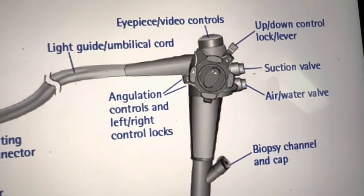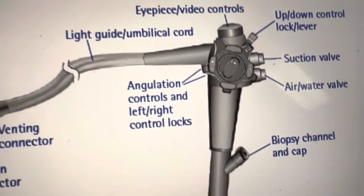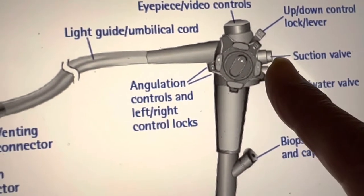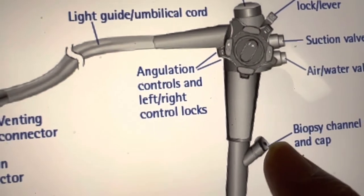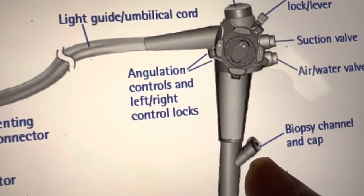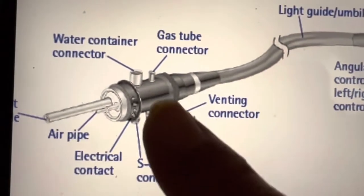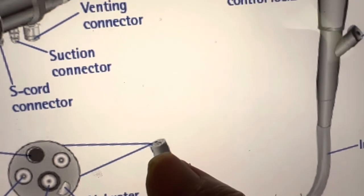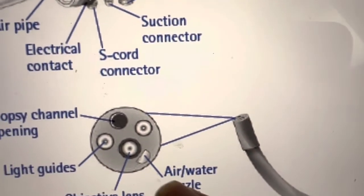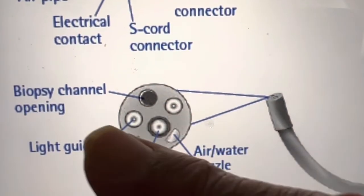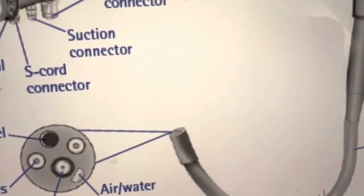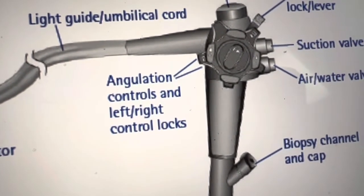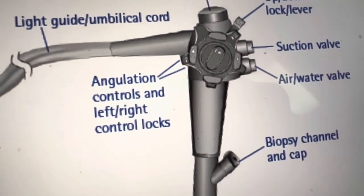This is the colonoscope and I want to show you the various controls. Up here is the air-water button, then this is the suction, and this is the area where we put the biopsy forceps or snare through to take a biopsy of a tumor or for removal of a polyp. This is the light source where you attach to the light source and the light goes to the lower part of the colonoscope. At the tip you see the air-water nozzle, objective lens, light guides, and the biopsy channel. The image is taken through the colonoscope and shown on the screen, from where we look at the colon and manipulate the colonoscope.